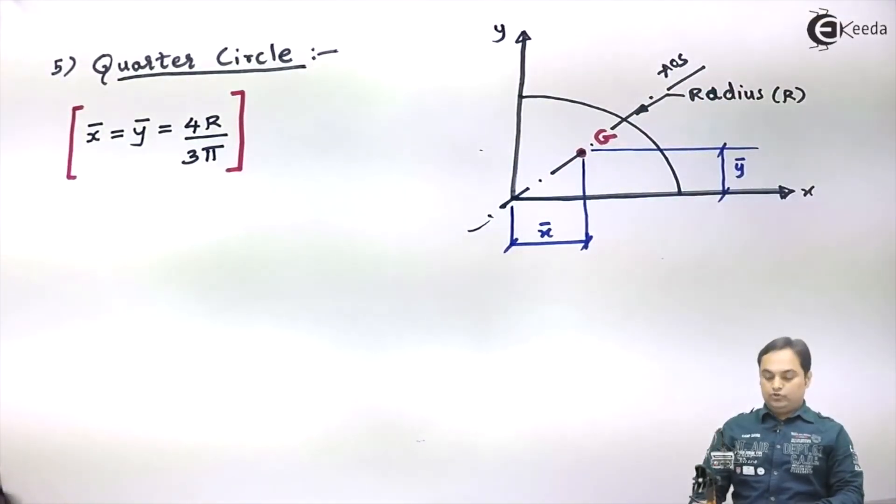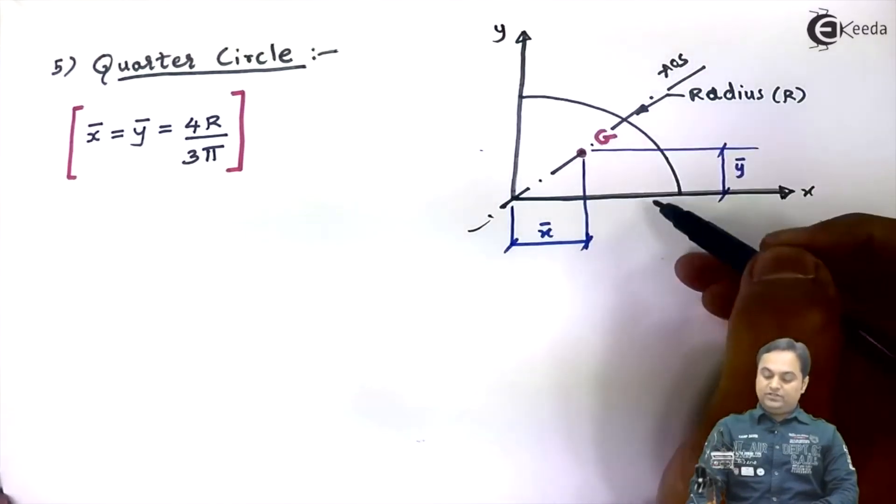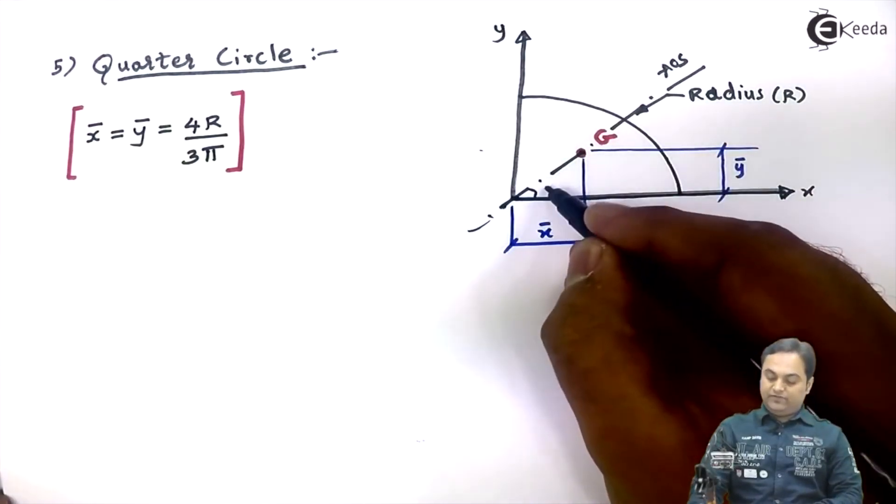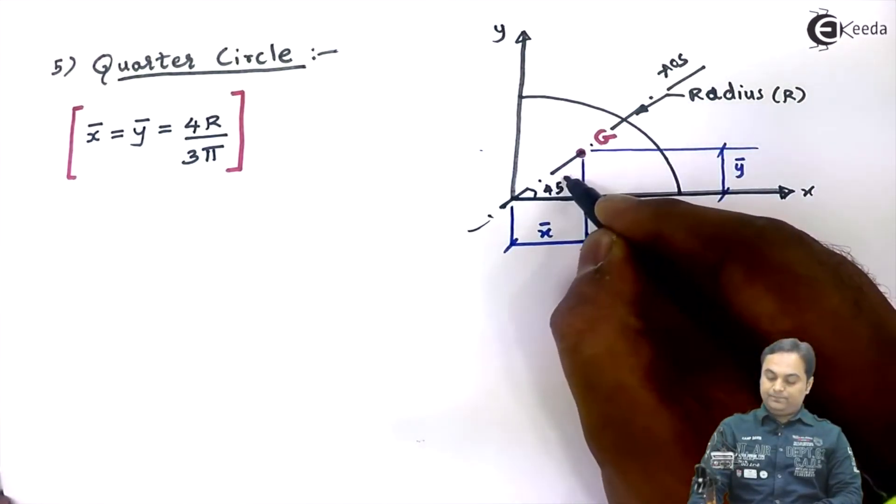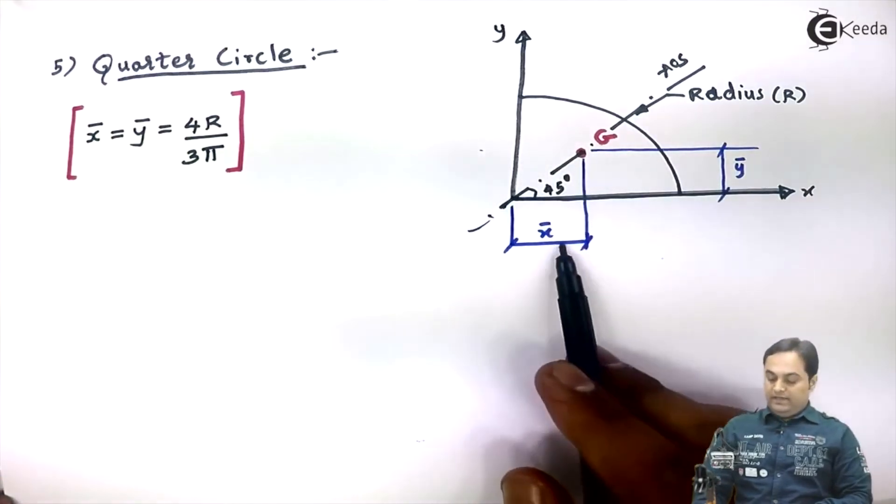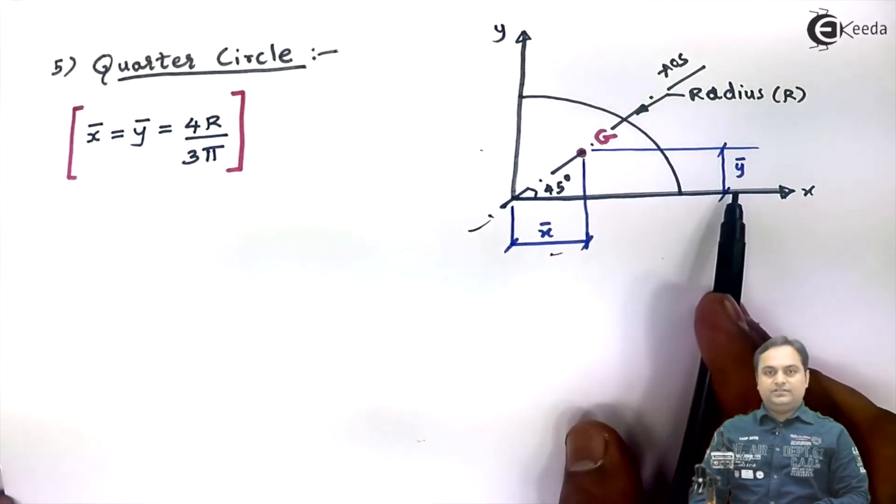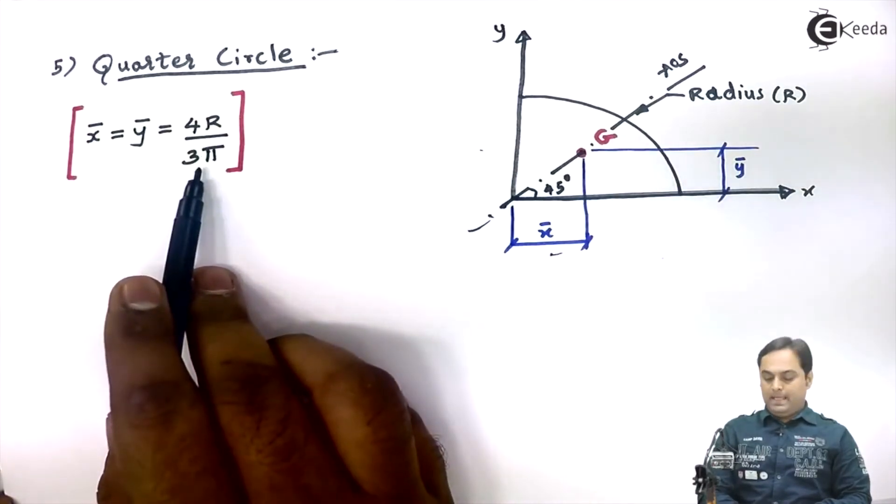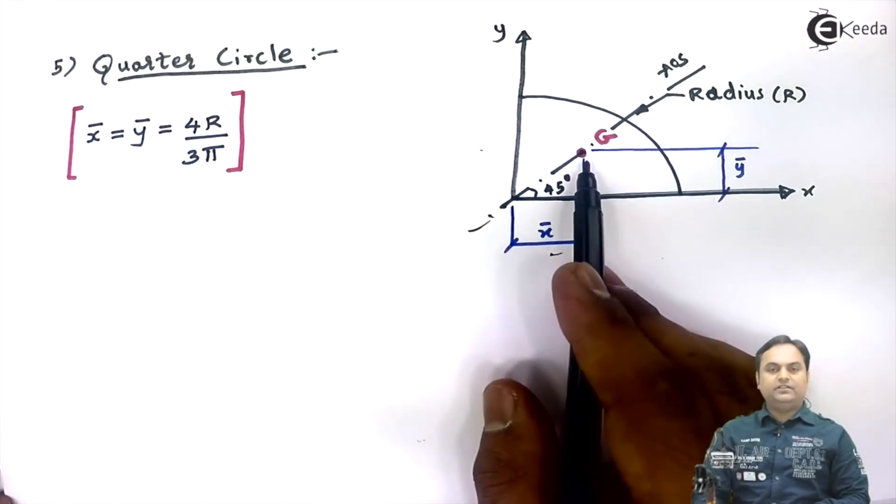So for a quarter circle, the axis of symmetry is at 45 degrees, and x̄, ȳ values both are same. They are 4R/3π. So in this way we would be locating the centroid for a quarter circle.